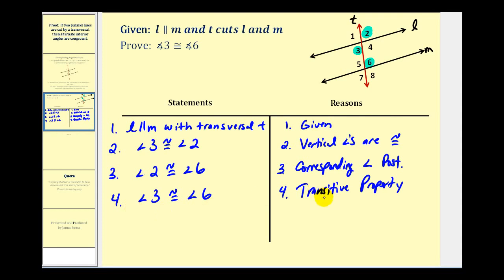And that's pretty much it for the proof showing that if two parallel lines are cut by a transversal, then alternate interior angles are congruent. I hope you found this helpful.